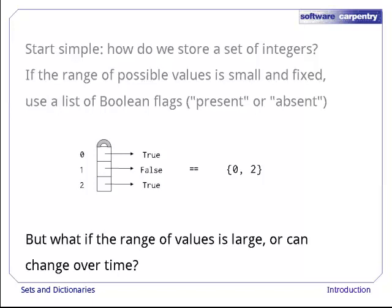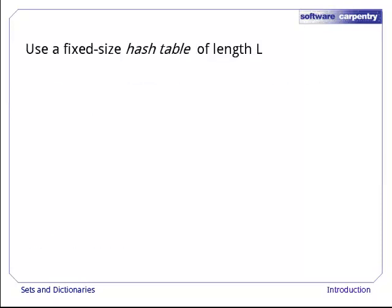But what if we want to store any integer at all? It isn't practical to create a list of 2 to the 32 booleans. The solution is to use one of the great inventions of computer science, called a hash table. This is just a list of some fixed length, which we'll call l. When we want to store an integer i, we calculate i mod l and put it there.